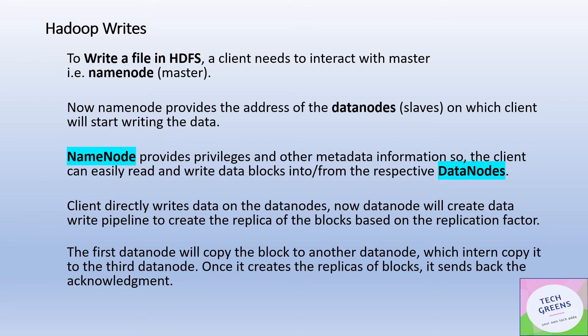The NameNode then provides the client back with a list of addresses of DataNodes on which the actual blocks would be written. The client directly writes data on the DataNodes — the NameNode doesn't come into the picture for the actual data transfer; it only provides the metadata location of the DataNodes. DataNodes will then create a data write pipeline, which is meant to create replicas of a single block across two other nodes if the default replication factor is three.